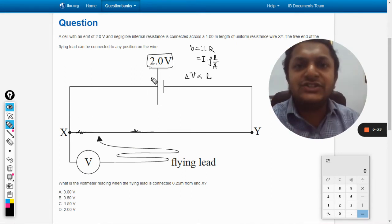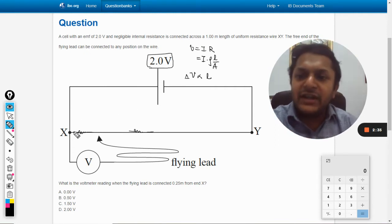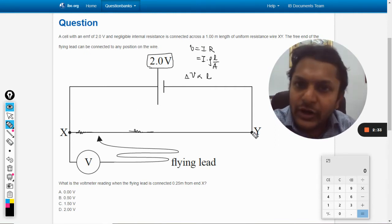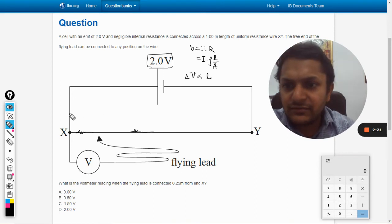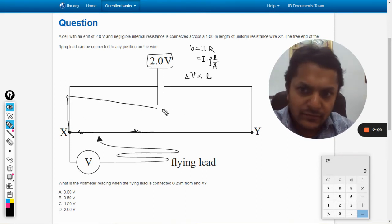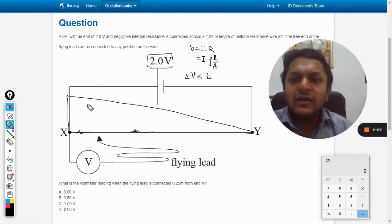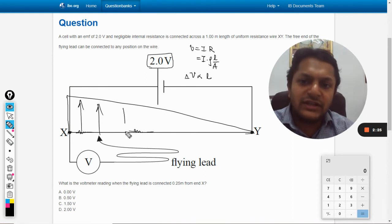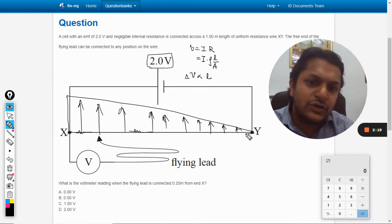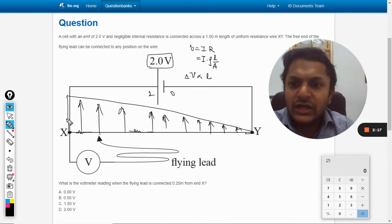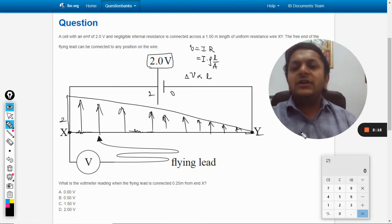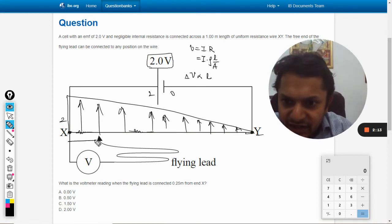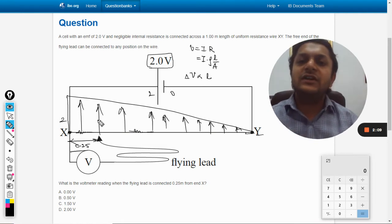The total of two volt potential is dissipated from the point X to point Y in a linear fashion. This is how the voltage is reducing with respect to length. It started with two and here it is zero. Now he is asking if this is 0.25, what will be the voltage difference?